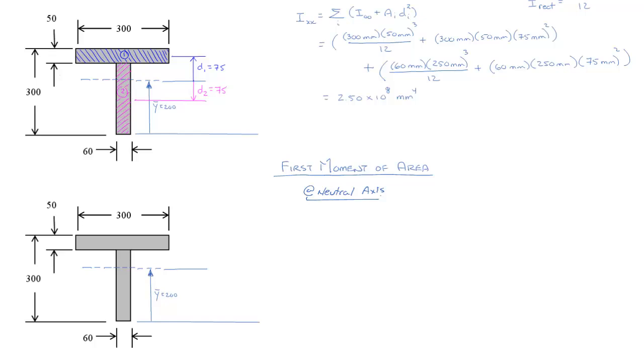The other one, which is again a very natural place to look at, is the interface between the web and the flange because we're going to have to design some sort of a connection there whether it's a glued interface or welded interface and we need to make sure that it will transfer the shear stresses between the two components of our composite section.